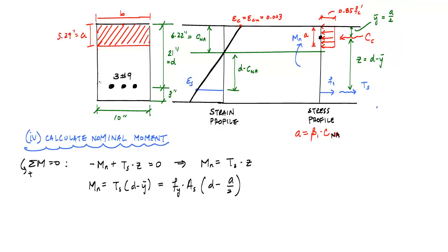This A over 2, it's important to know, is specific to a rectangular cross section with the Whitney or equivalent stress block. You can't, if you have like a triangular cross section here, this A over 2 no longer applies. You have to calculate the centroid of this area. In this rectangle, the centroid just happens to be right in the middle, A over 2. So that's easy. So now, if I just substitute, this MN is equal to 60 KSI times the area of the steel, which was 3 inches squared.